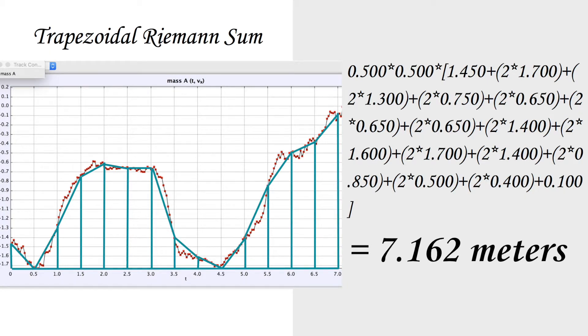Finally, we will now calculate the trapezoidal sums. The equation for a trapezoid is one half base one plus base two times height. Since we have 14 equal subintervals of 0.5, our height will be 0.5. Our bases will be the y value of the graph.